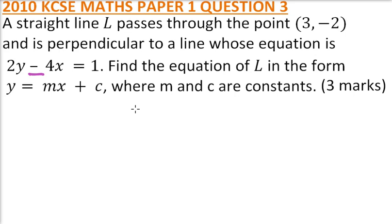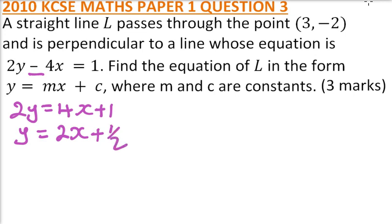So here we say 2y = 4x + 1, divided by 2, so you have y = 4 divided by 2 is 2x, and 1 divided by 2 is a half, so we have 2x + 1/2. So it means that the gradient of this line is equal to 2.